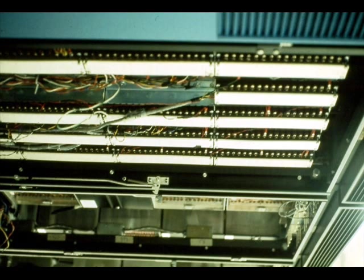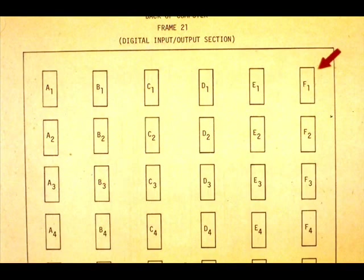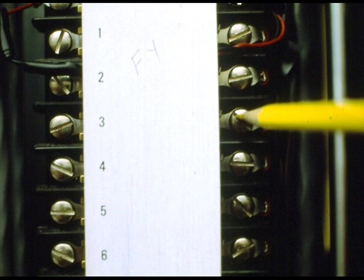This is frame 21. Study this drawing of frame 21. See if you can locate strip F4. Here is row F. This is strip F4. This is F4, terminal 3B.